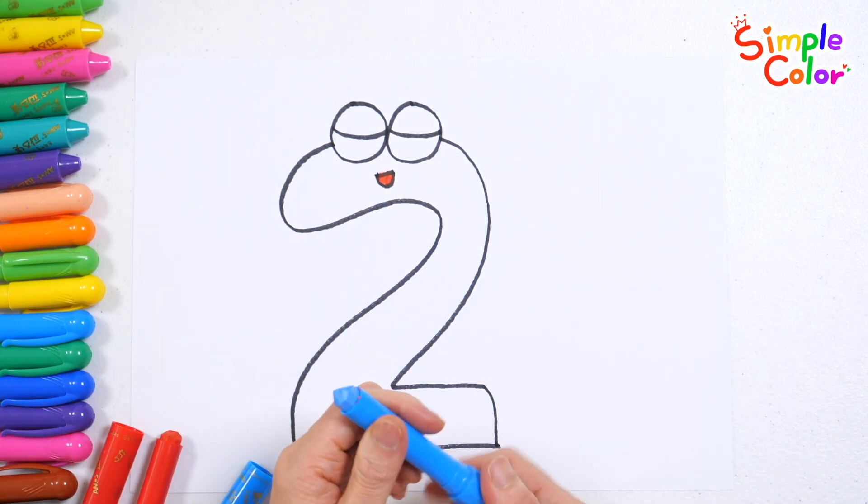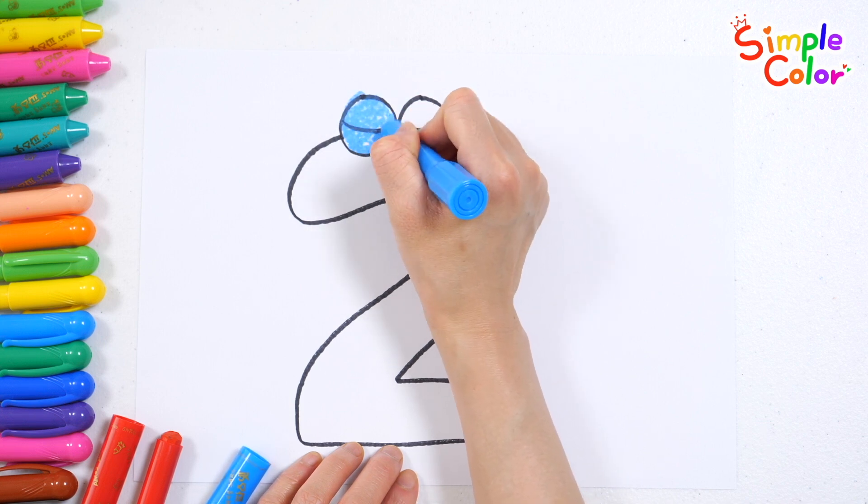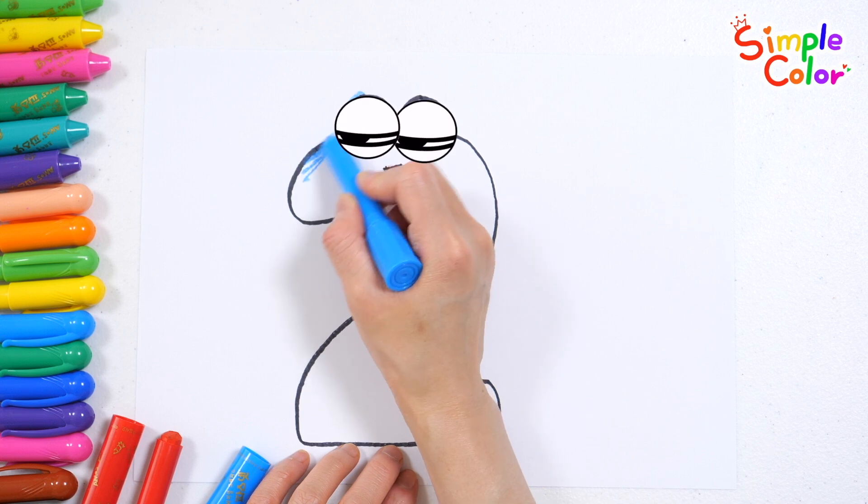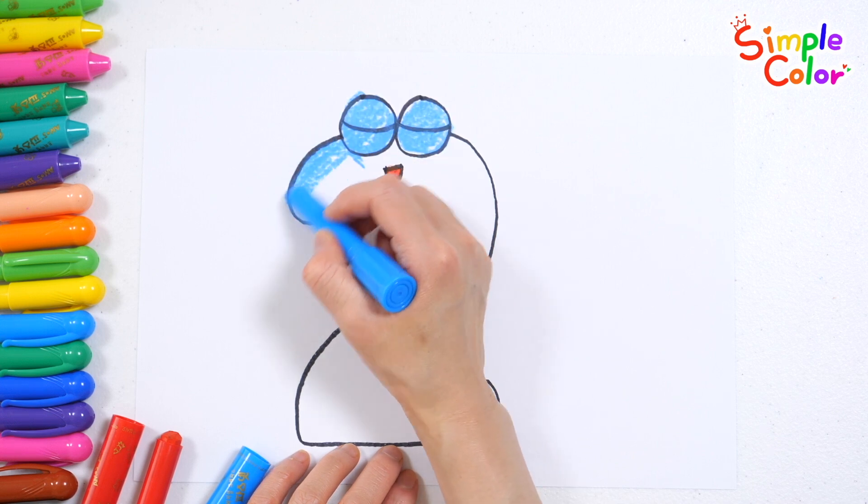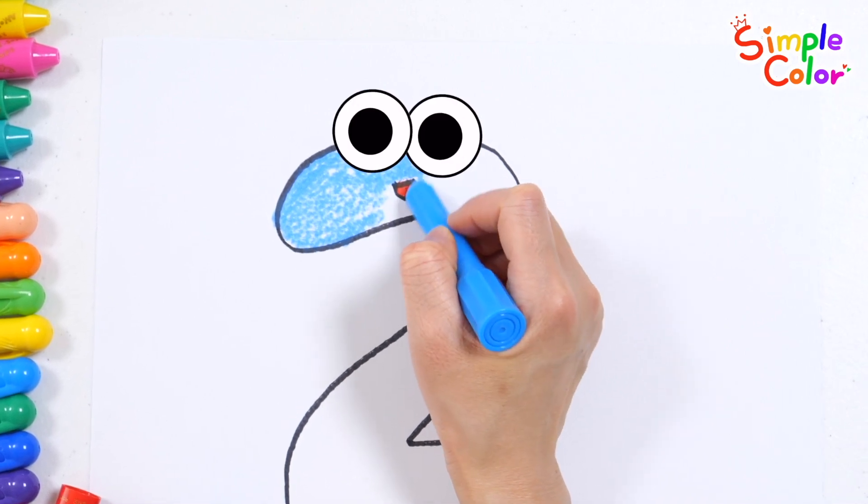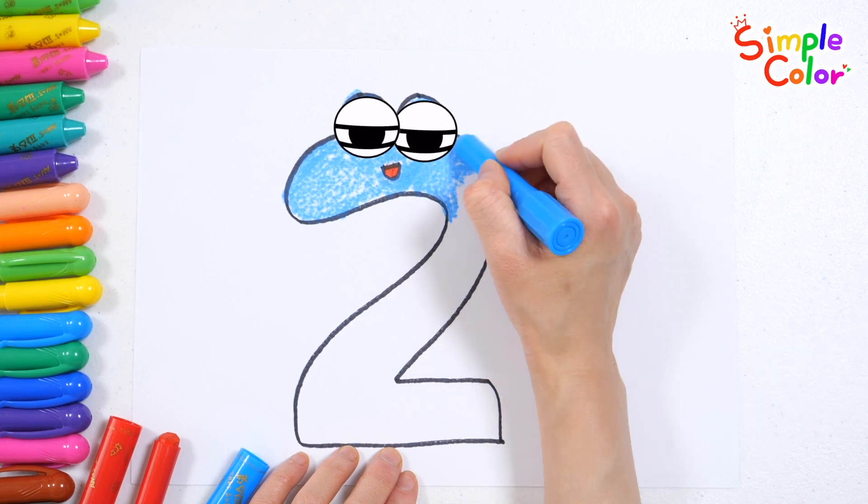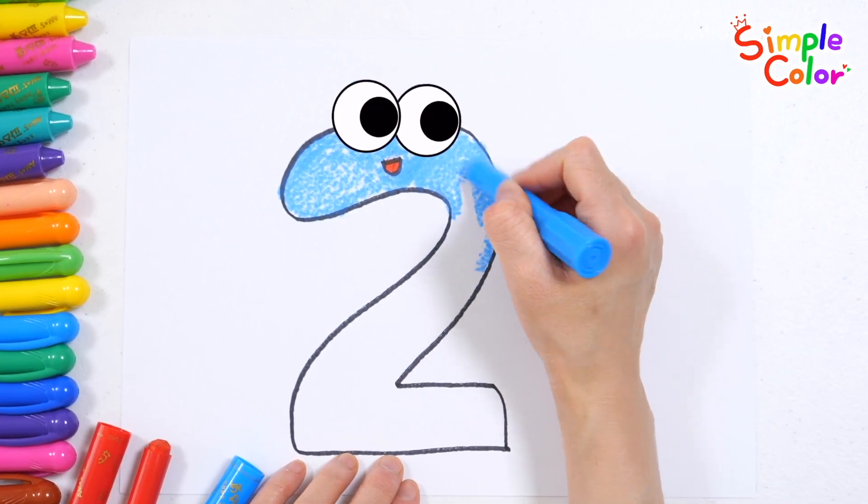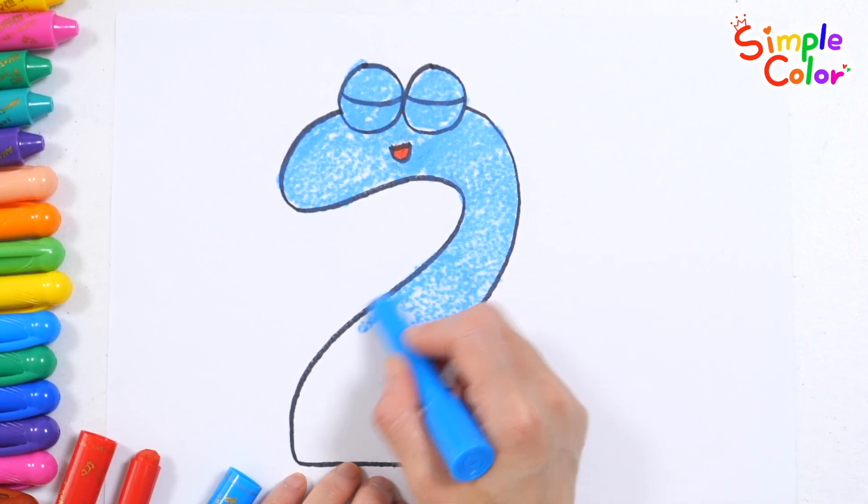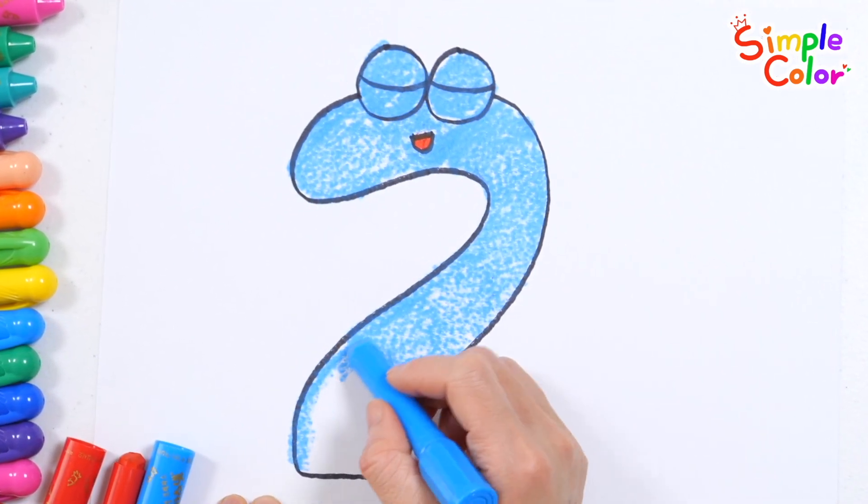Now I know my ABCs. Next time won't you sing with me? A, B, C, D, E, F, G, H, I, J, K, L, M, N, O, P, Q, R, S, T, U, V, W, X, Y, and Z. Now I know my ABCs. Next time won't you sing with me?